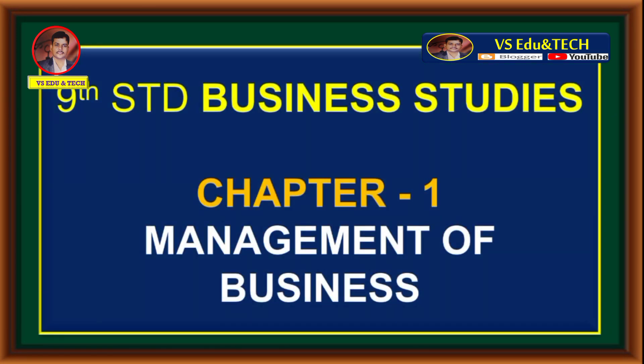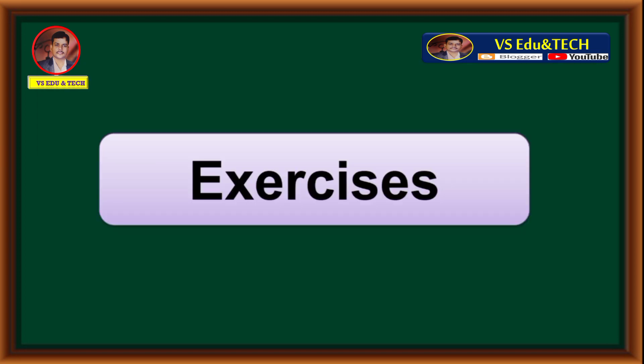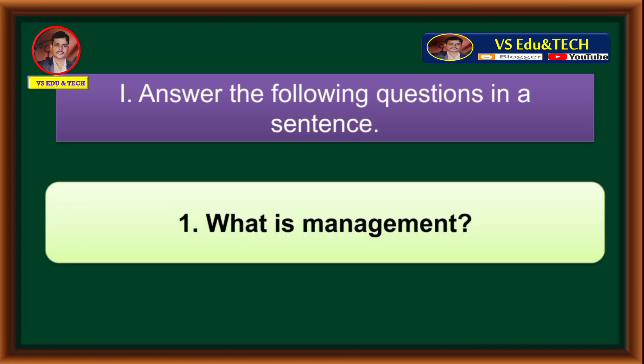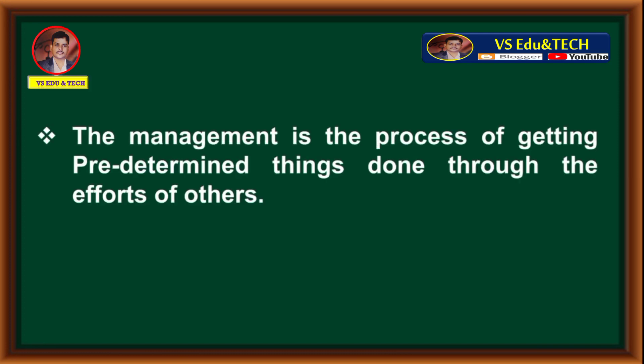9th standard Business Studies, Chapter 1: Management of Business. Exercises, first mean answer the following questions in a sentence. First one: What is management? Answer: Management is the process of getting predetermined things done through the efforts of others.